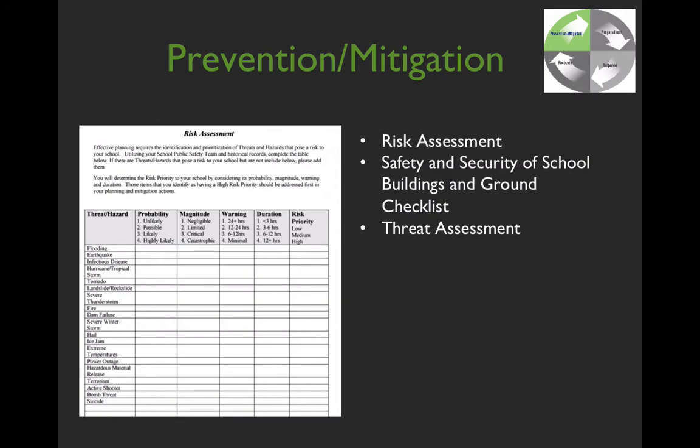Schools and supervisory unions can access other first response resources. We would encourage everyone to work with their local emergency responders and their local emergency management director when working on this risk assessment. Those individuals have historical data about your area and what you should be putting into this guide. You can also look at the state hazard mitigation plan, which will provide information about your region and what it is generally susceptible to.